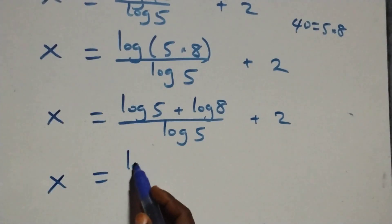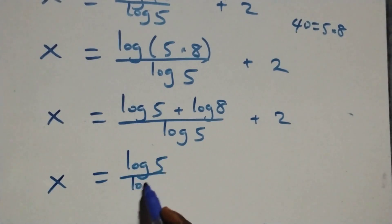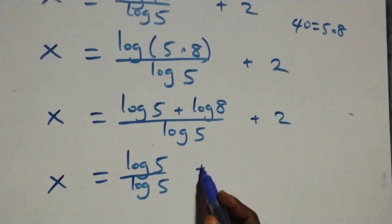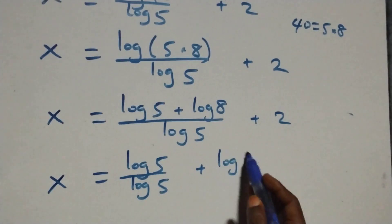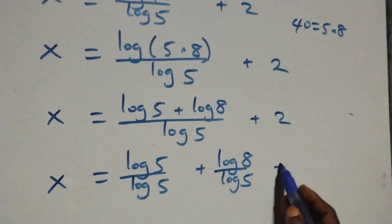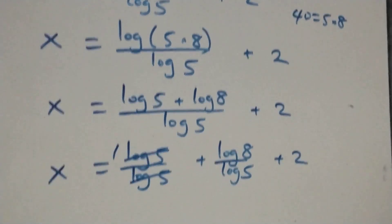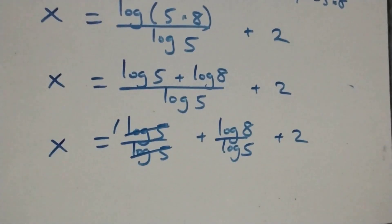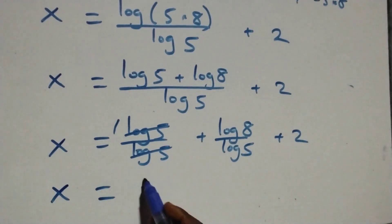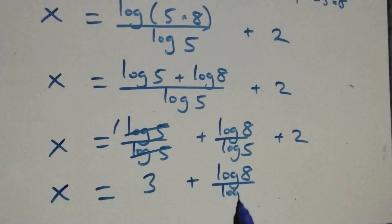We separate into two fractions: x equals log five over log five plus log eight over log five, plus two. Log five over log five cancels to give one, so this becomes x equals one plus two plus log eight over log five, which is x equals three plus log eight over log five.